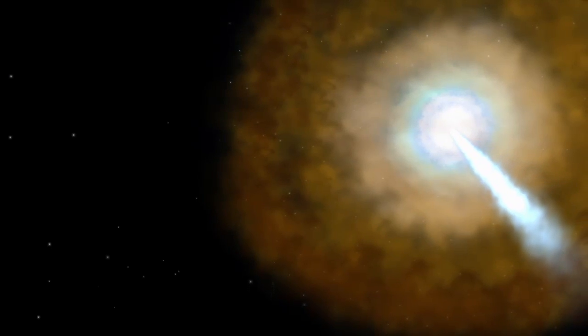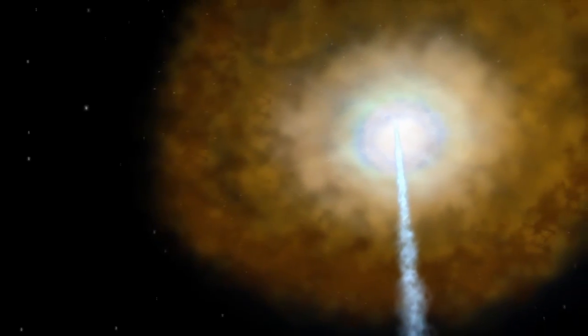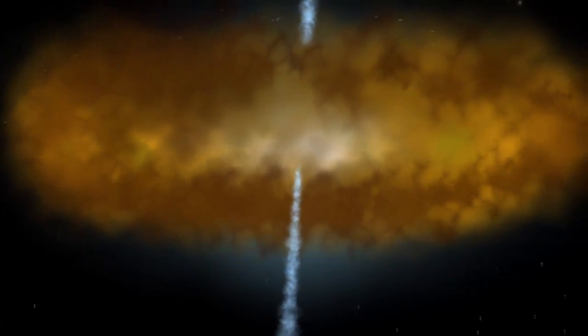What emission we detect from an active black hole is a function of how we see it, whether we're looking face-on and into one of its jets, or viewing it from the side through the disk of gas and dust that surrounds it.